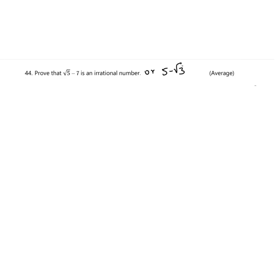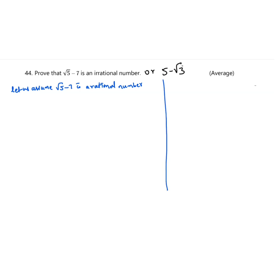Prove that √5 - 7 is an irrational number. Let us assume √5 - 7 is a rational number. I'll be doing both problems simultaneously so that you understand they follow the same approach.